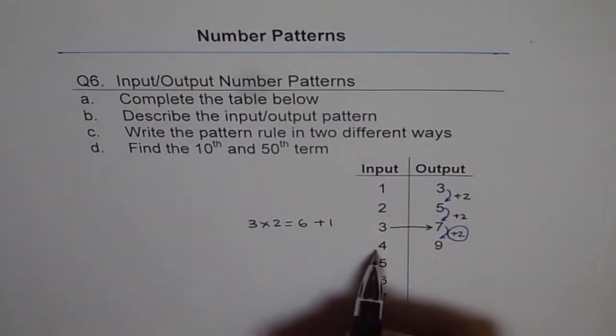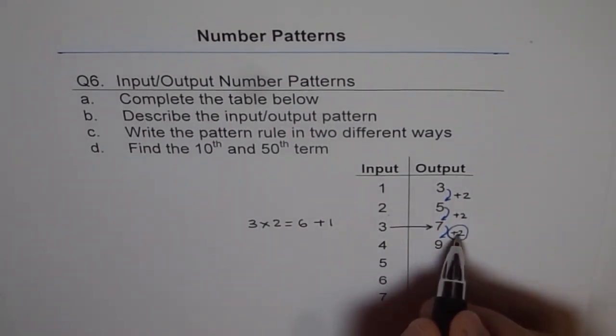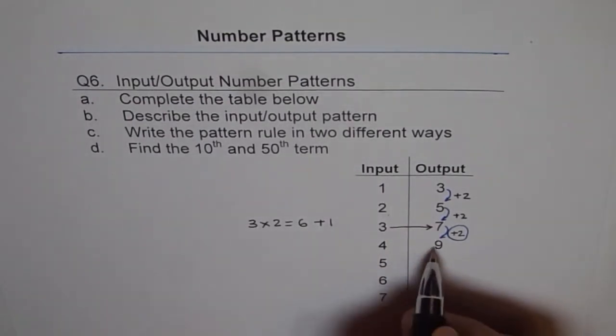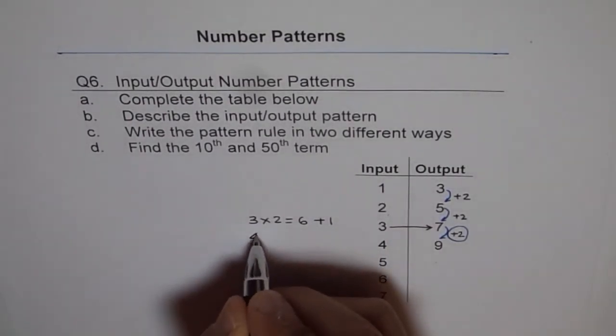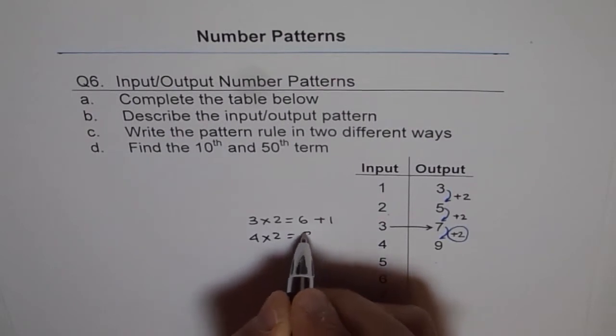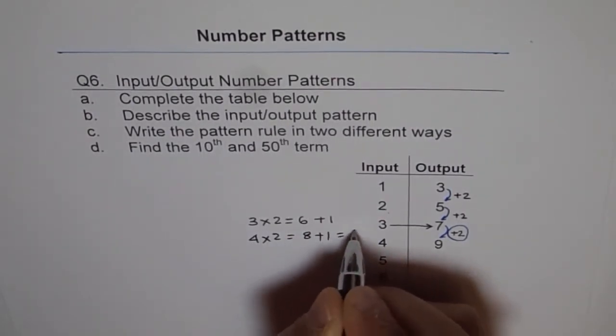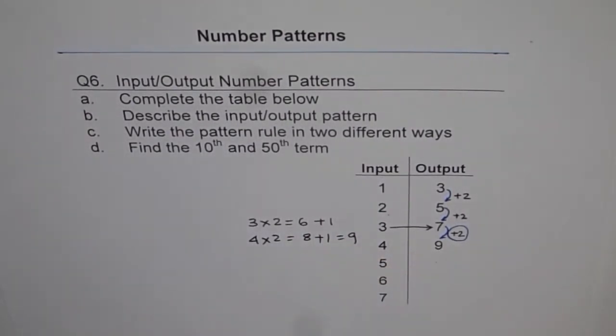Let's do 4. What is 2 times 4? Or 4 times 2. So we will multiply this number by 2 and then add 1. Do we get 9? Let's check. 4 times 2 equals to 8 plus 1 equals to 9. Yes, we do.